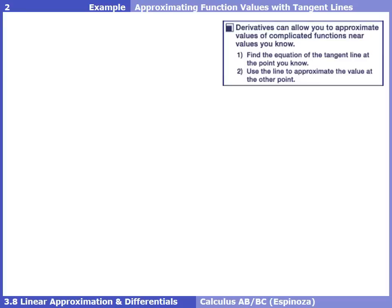Let's look at the example of approximating the square root of 4.1 using a tangent line. In this section, we're just taking those tangent line equations and using them one step further to approximate function values. Luckily, we're just dealing with two steps: writing the equation of the tangent line at the point we know, and then using that tangent line equation to approximate the value we're looking for — in other words, just plug in and evaluate.